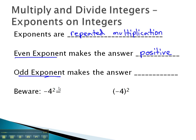Similarly, if we have an odd exponent, we have an odd number of negatives being multiplied together. This makes the answer negative.